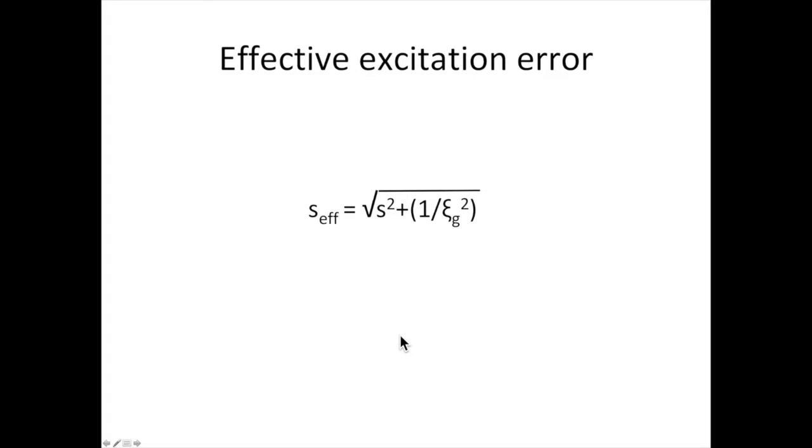This is the equation to describe the effective excitation error. The effective excitation error is a function of excitation error and cc is the extinction distance.